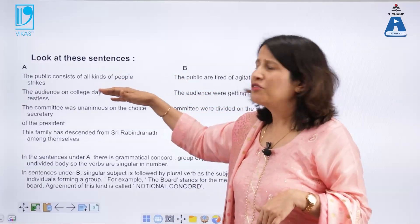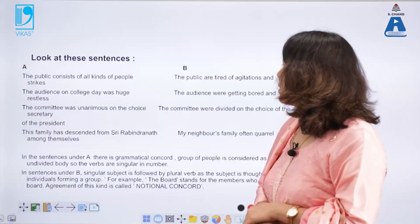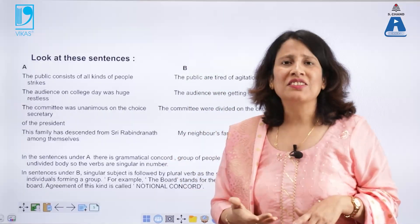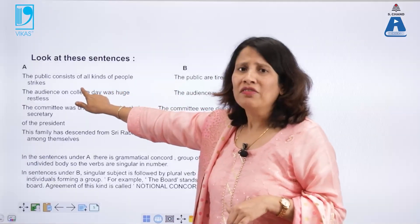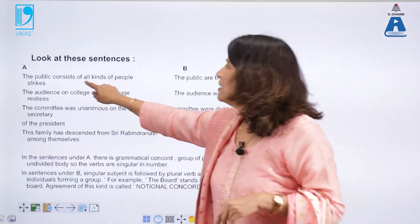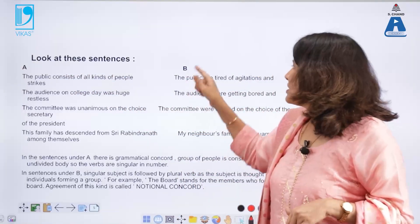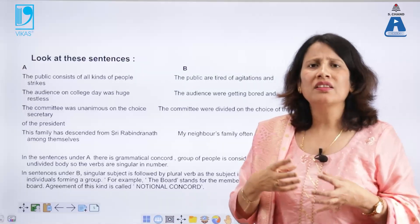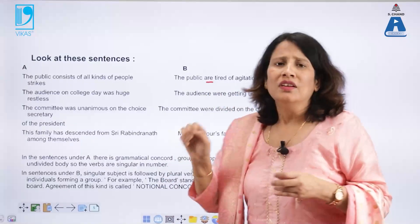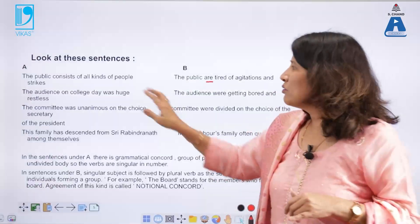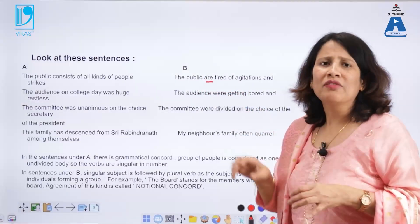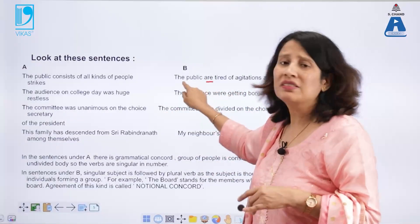In column A, for example: 'The public consists of all kinds of people.' In column B: 'The public are tired of agitations and strikes.' In the first sentence, the public is treated as one single unit, so it is followed by the singular verb 'consists.' In the second sentence, the public is not a single entity — it is considered as the people who form the public, so it is followed by a plural verb. The members of the public are important in the second case, while public as one unit is important in the first. That is why a plural verb 'are' is used with the same subject 'public' in the second column.